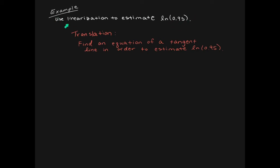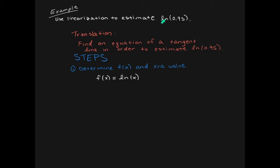Use linearization in order to estimate ln of 0.95. Here's the English translation: we're going to find the equation of the tangent line, and then use that tangent line to estimate ln of 0.95. The first step is to look at the number you're estimating and determine what is your f of x and what is your x equals a. The x equals a should be the point of contact for the tangent line — it's not 0.95. The function f of x is ln, and the point of contact will be x equals 1.